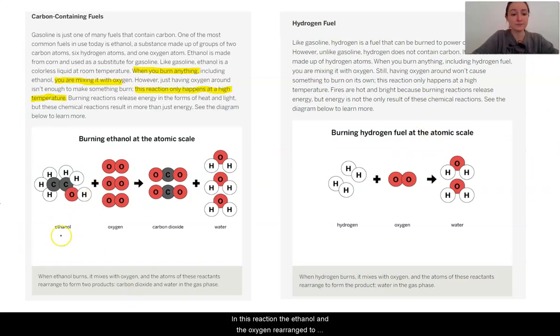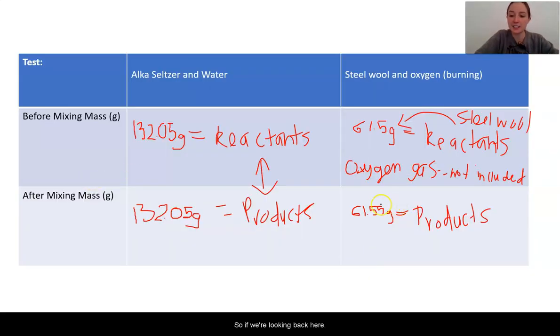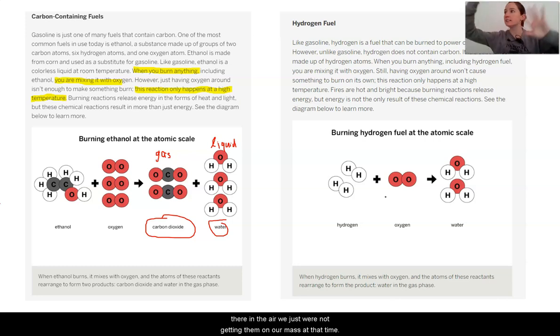Now, in this reaction, the ethanol and the oxygen rearrange to form carbon dioxide, which is a gas, and water, which is a liquid. Interesting. Now, if you notice, oxygen atoms that were part of this oxygen gas have rearranged to become attached to some of the atoms in the ethanol. So this rearrangement now has made it so that these oxygen atoms are now being included in the mass. So if we're looking back here, atoms were not actually appearing, they were always there in the air, we just were not getting them on our mass at that time.